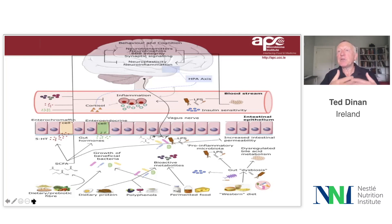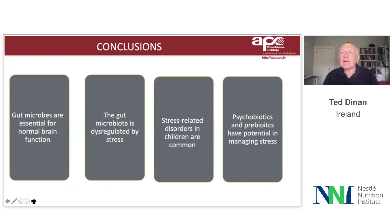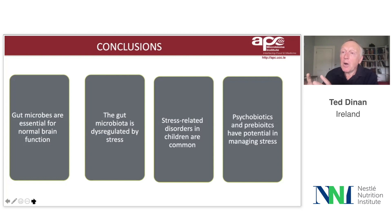The diet of the child is certainly something one needs to look at when talking about mental health. Sometimes with mental health we look at genetics or the stress in the child's environment, but we tend to ignore a very important component — the actual diet the child is on. In conclusion, gut microbes are essential for normal brain function. The gut microbiota is often dysregulated by stress, and stress-related disorders are common in children. I would suggest that in children, the most important thing is to have a good diet, but psychobiotics and prebiotics have potential in managing stress-related disorders in children.